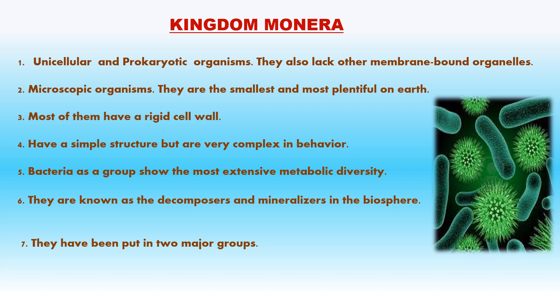Modes of nutrition in Monera: Photoautotrophs use light energy; Chemoautotrophs derive energy from chemical reactions; Heterotrophs depend on other organisms for food; Symbionts have a beneficial relationship with other organisms; Parasites live on or in other plants and animals. They are known as decomposers and mineralizers in the biosphere. They have been put in two major groups: Archaebacteria and Eubacteria.